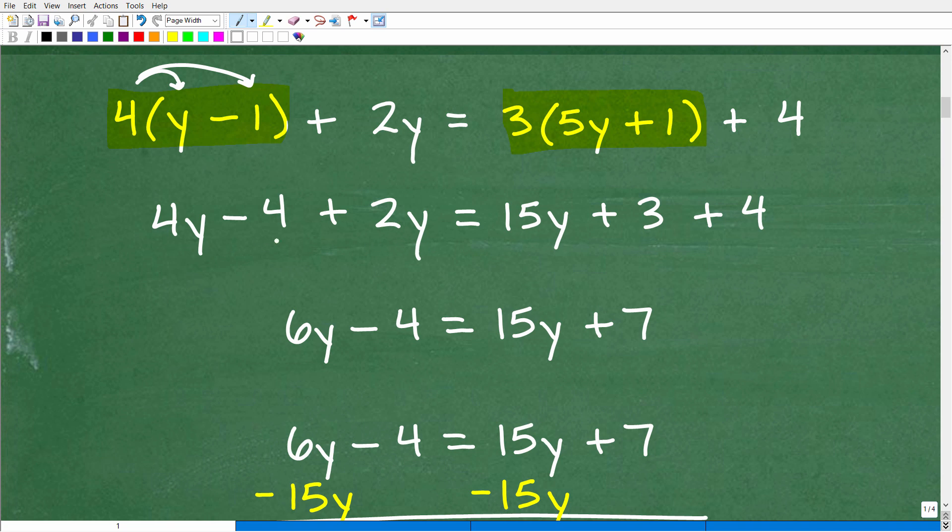So this is going to be four Y minus four plus two Y. So when I do this, I'm just going to rewrite the rest of the left hand side of the equation. You don't want to do too many steps at once when you're solving equations. You want to make it easy for your teacher to read and understand what you're doing. So on the right hand side, we have three times five Y. Of course, that's 15 Y. And there's three times one is three plus four. So you can kind of see the steps here. You're like, okay, I understand that we took care of the distributive property situations first.